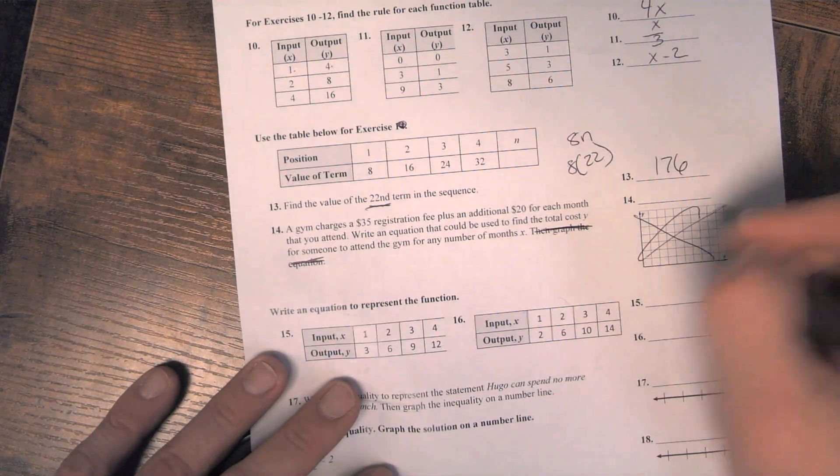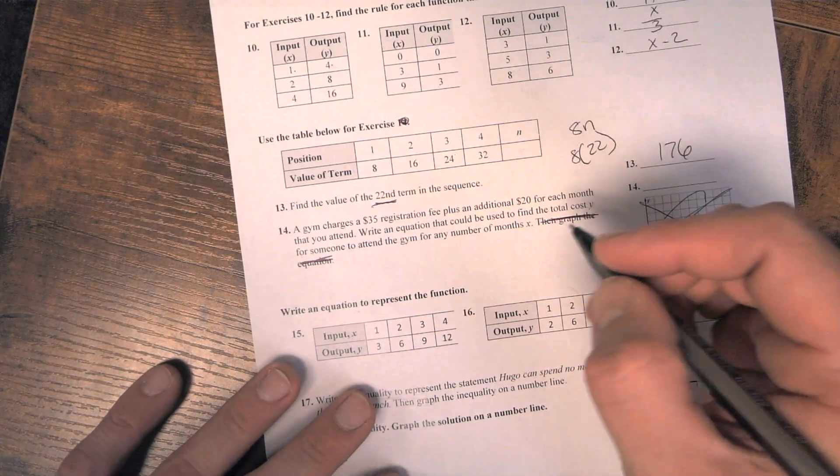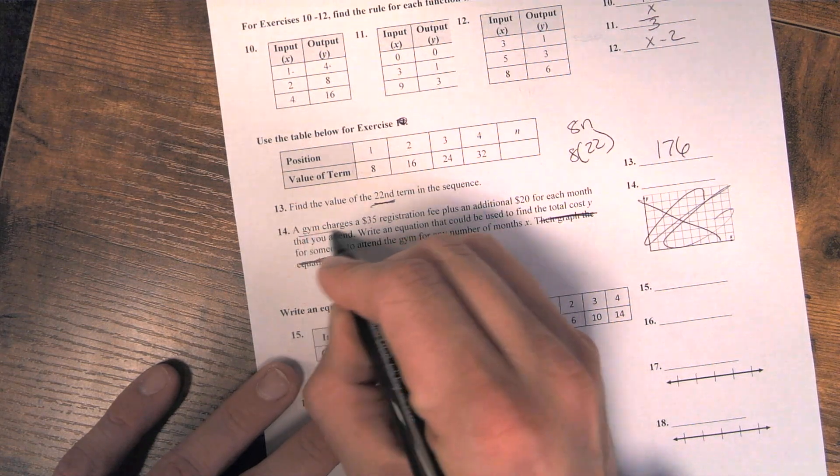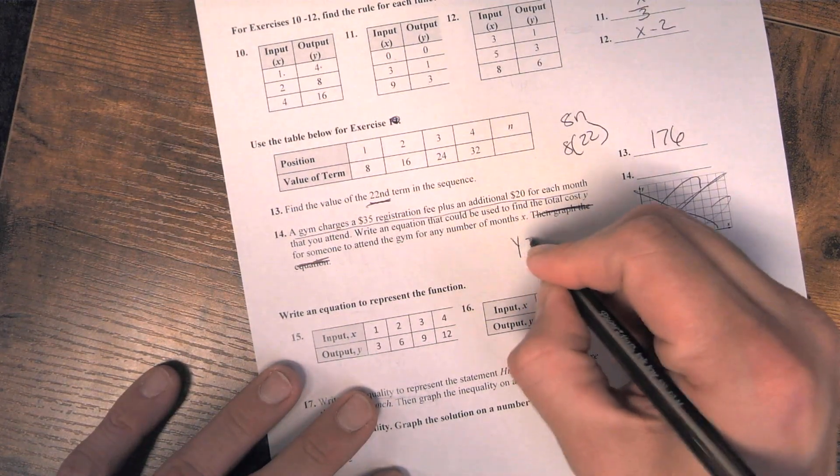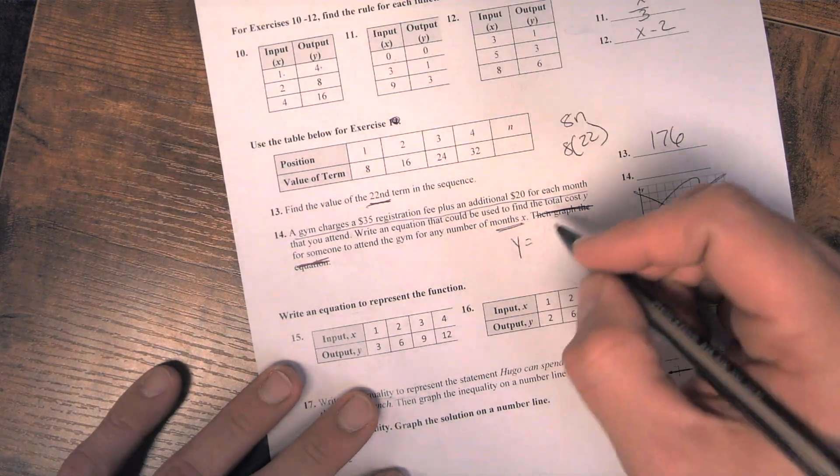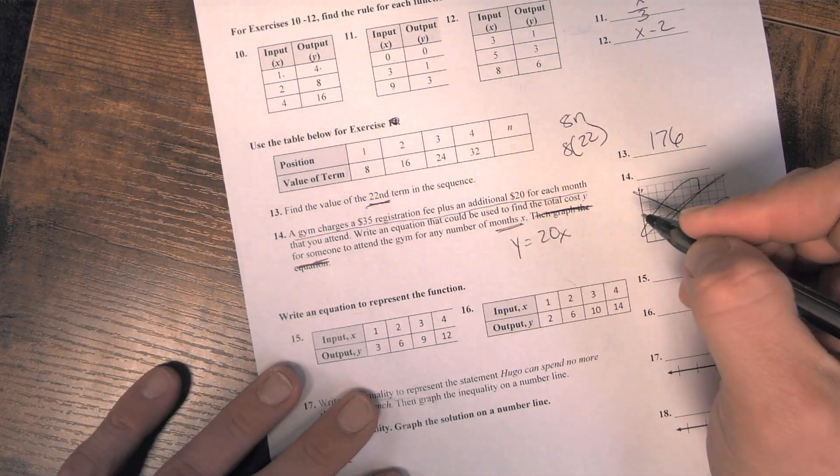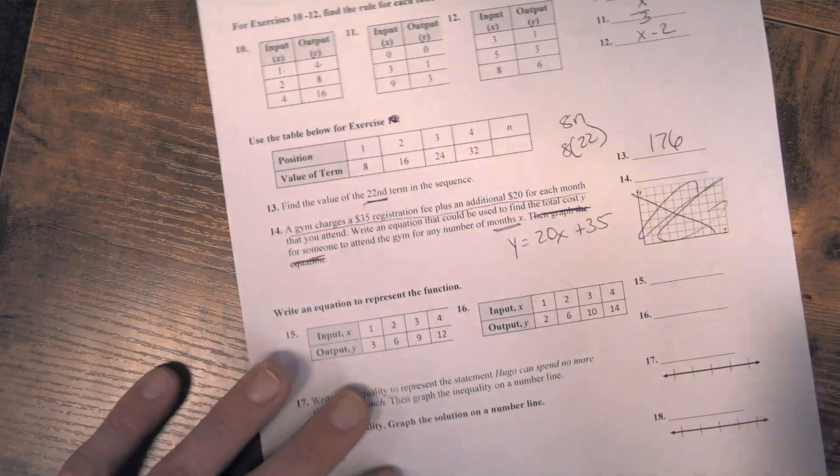Number 14, we're just writing the equation. So if the gym charges $35 plus $20 per month, it's going to be y equals x is months. So 20 times x plus that $35 fee.